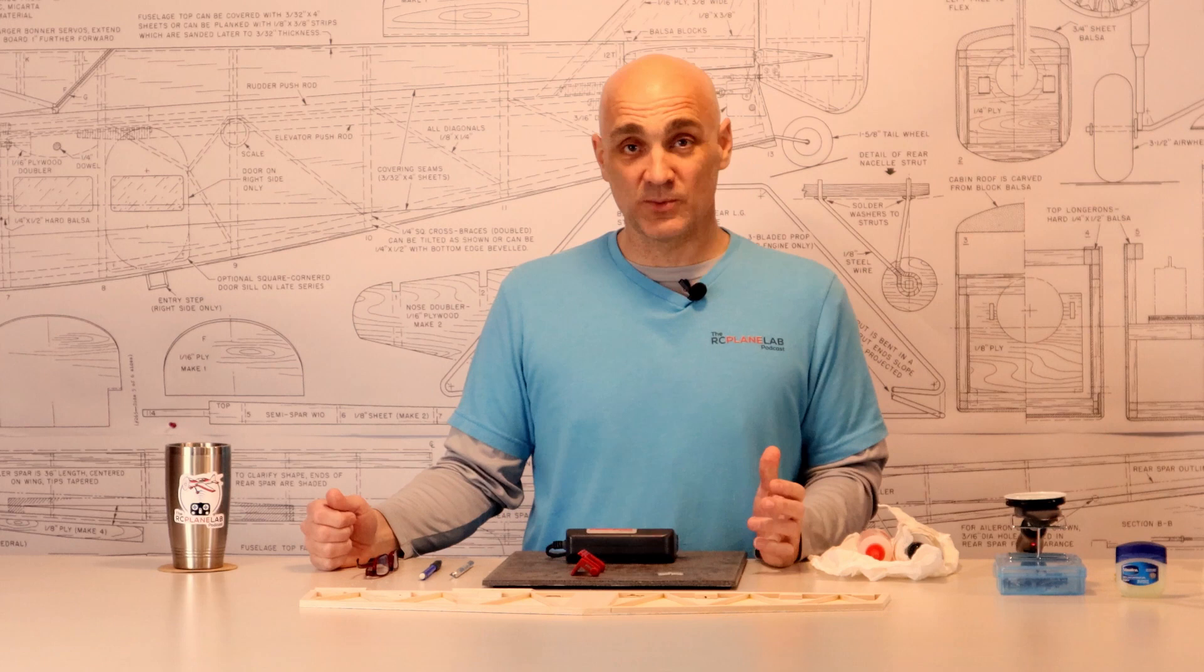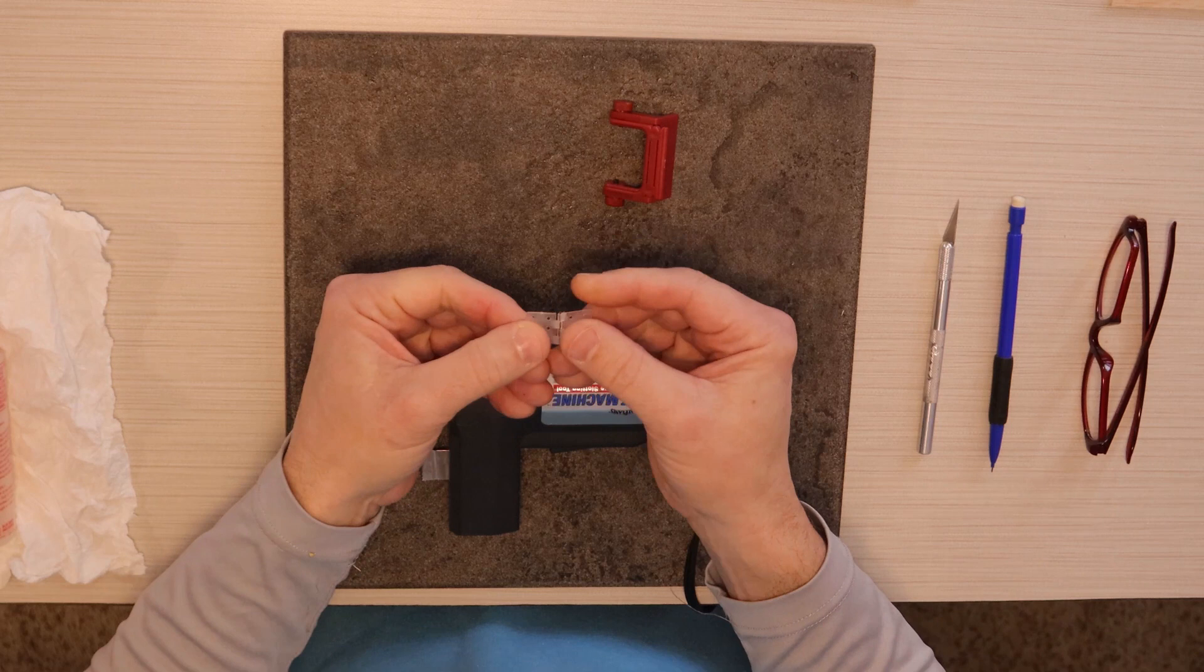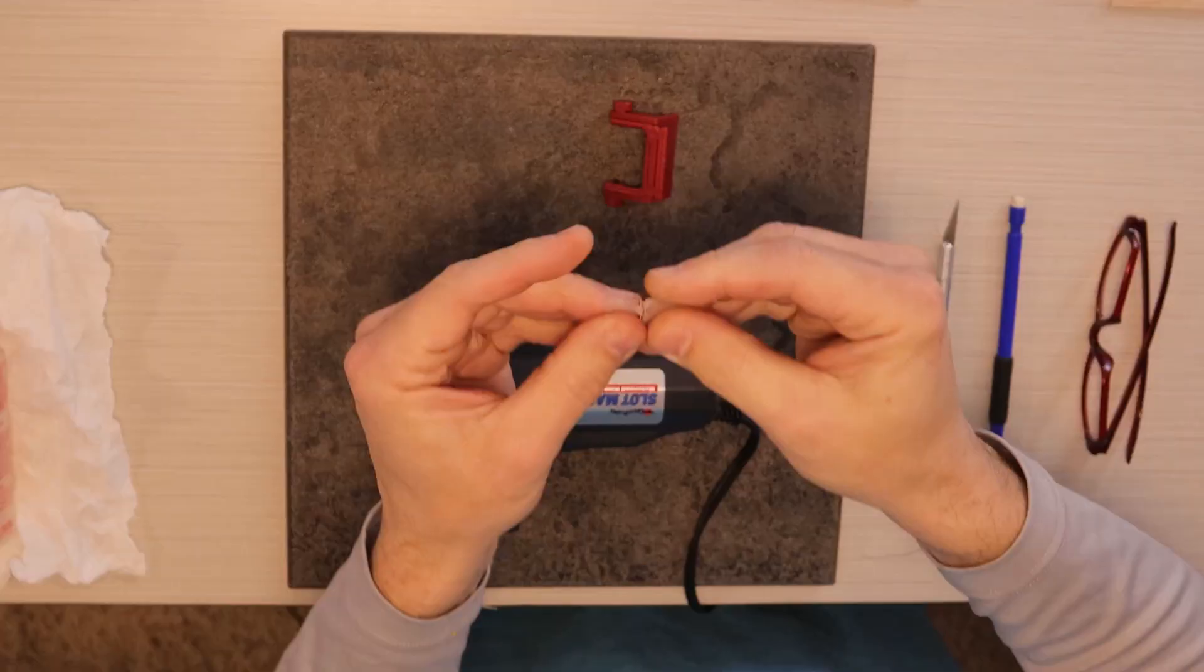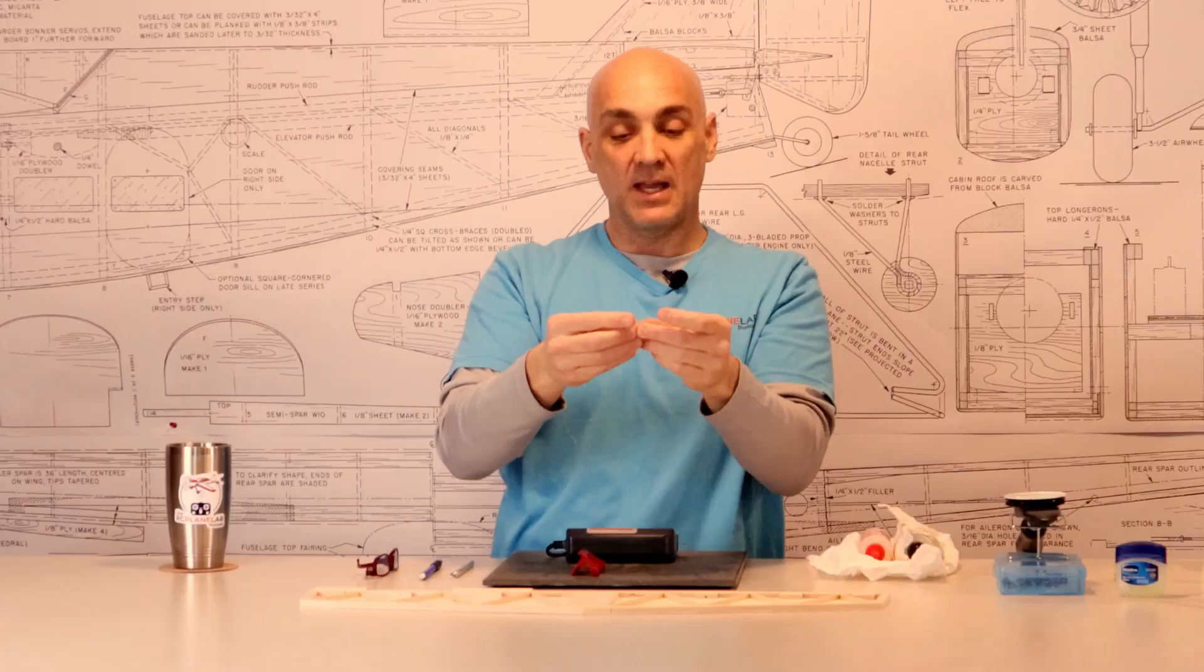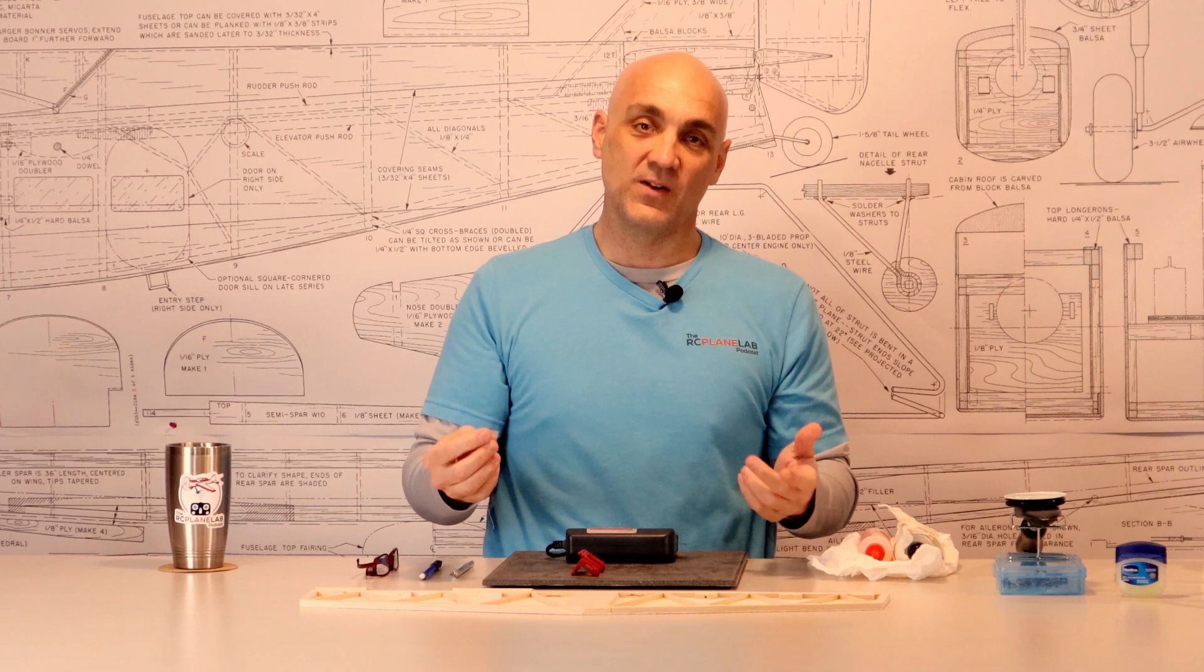I'm going to show you how to use it using this Dubro flat style pinned hinge. You can see they're pretty floppy, pretty freely moving hinge. These are great hinges. They're very, very thin, almost as thin as a CA hinge, which is pretty easy to cut a slot for. But what fun is that when you have a power tool like this?